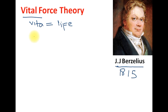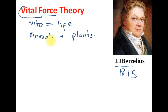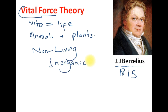According to this theory, the sources of organic compounds are only living things — that is, animals and plants. Any organic compound formed from animals or plants requires a special force called the vital force. So living sources produce organic compounds, and non-living sources produce inorganic compounds. This was the old concept: living source gives organic compounds, non-living source gives inorganic compounds. But this theory later had a drawback.